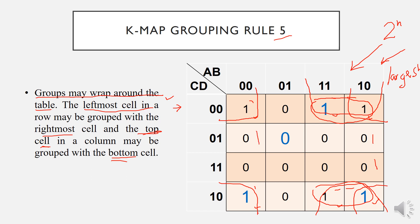Extending this further, if we have ones on both the left side and the right side of the K-map, we can take all eight cells as one single group by wrapping around. This is one of the most important rules for achieving the most simplified expression. Details and examples of this will be shown in the next part.